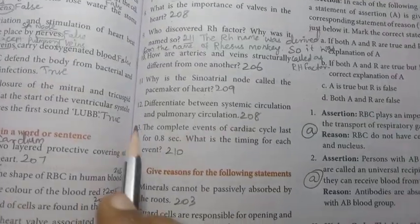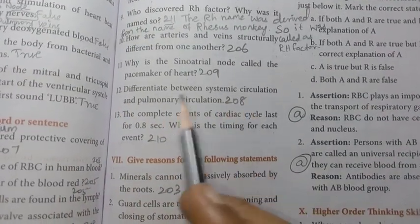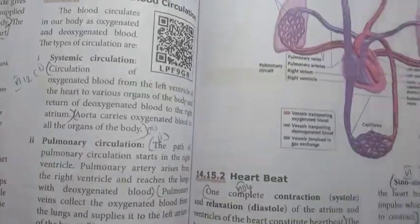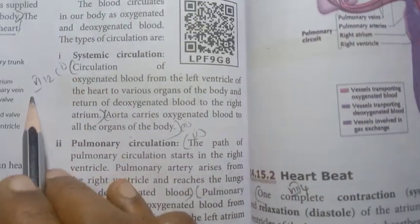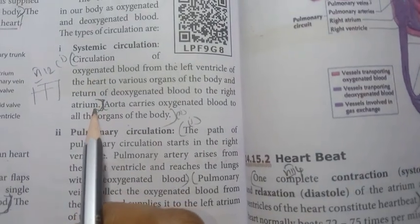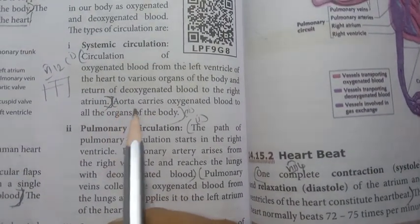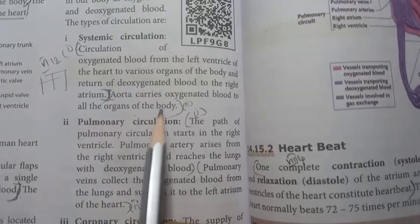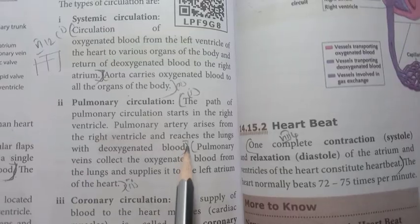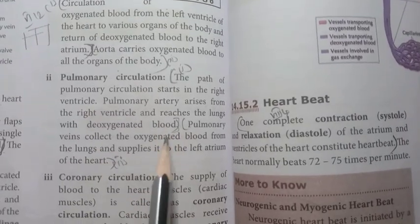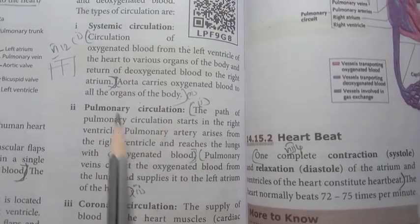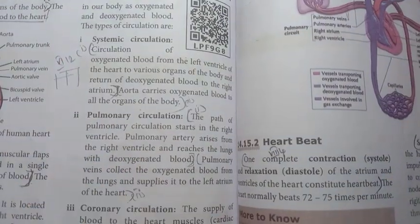Question 12: differentiate between systemic circulation and pulmonary circulation. Page number 208. Write in tabular column format since it says 'differentiate'. Systemic circulation: circulation of oxygenated blood from left atrium; aorta carries oxygenated blood to all organs of the body. Pulmonary circulation: deoxygenated blood; pulmonary veins collect oxygenated blood back to the heart. Two points each. That is the answer for Roman number 6, 12th question.